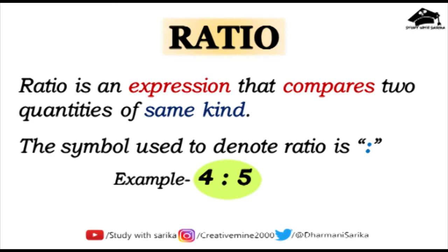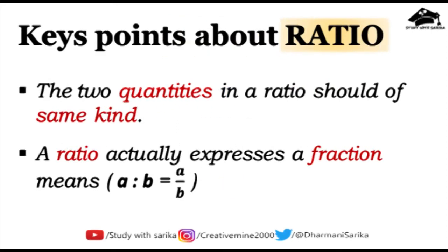The first important point about ratio is that the two quantities in a ratio should be of the same kind, meaning the unit of the quantities should be the same. If one quantity's unit is kg then the other is also kg; if one is in meters then the other is also in meters; if one is in minutes then the other is also in minutes. Keep this in mind while solving ratio questions.